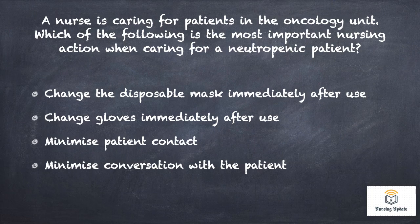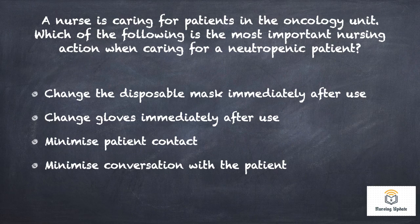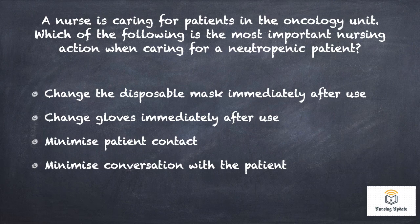The nurse is caring for a patient in an oncology unit. Which of the following is the most important nursing action when caring for a neutropenic patient? Neutropenia means when the ANC — absolute neutrophil count — is less than 1500. Option A: Change the disposable mask immediately after use. Option B: Change the gloves immediately after use. Option C: Minimize patient contact. Option D: Minimize conversation with the patient.